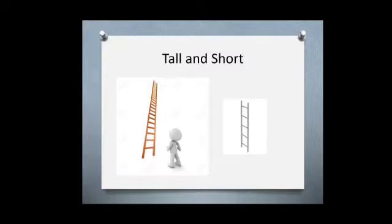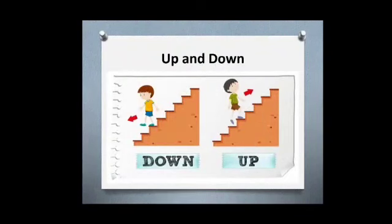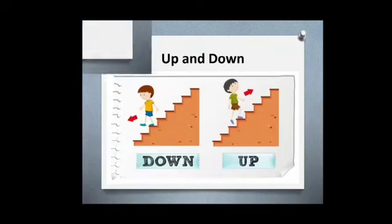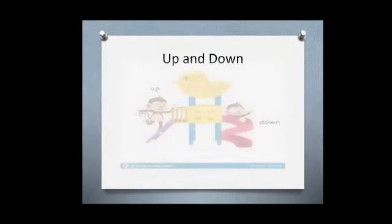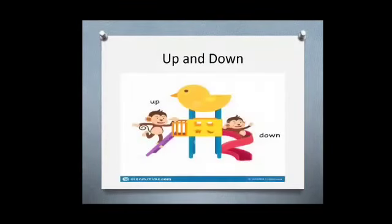Our next concept is up and down. In the first picture you can see a boy coming down the steps. In the next picture the boy climbs up the steps. One more example — can you see the first monkey climbing up the slide? The second monkey slides down the slide.